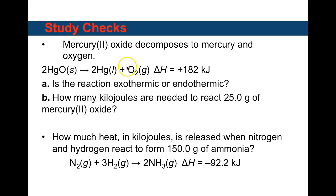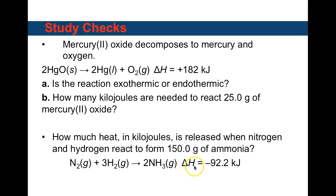Additional study checks: Mercury(II) oxide decomposes to mercury and oxygen, with delta H = positive 182 kJ (endothermic). How many kilojoules are needed to react with 25 grams of mercury(II) oxide? Next, how much heat in kilojoules is released when nitrogen and hydrogen react to form 150 grams of ammonia? Follow the same steps — convert grams to moles, then for two moles of ammonia use negative 92.2 kilojoules.